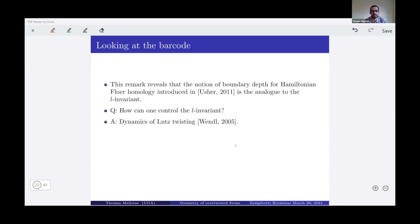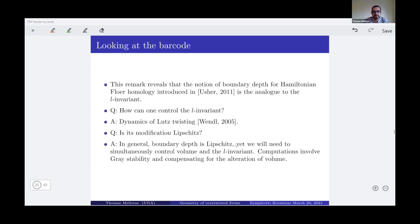Now, to the expert, this seems familiar, like the largest finite bar in the case of Hamiltonian Floer homology was introduced and this is called the boundary depth in Hamiltonian Floer homology. So the L invariant of the forms is the analog to the boundary depth in this case. The question is, how can one control then the L invariant, if one can control the L invariant? And the answer is the dynamics of the large twist. So I'm going to talk about the large twist later on, but really what I'm doing here is I'm using work by Chris Wendl, by Wendl's thesis essentially, in section 3.1, where he works with the dynamics inside the large tube. And the second question one can ask is, is this modification Lipschitz? And in general, experts expect this to be Lipschitz, yet we have to be very careful here, because we need to control volume and the L invariant simultaneously.